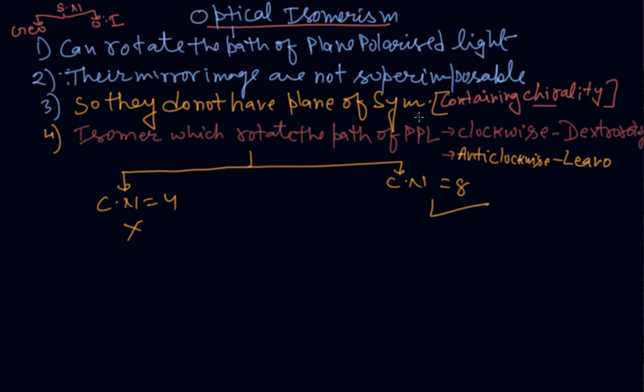And the isomer which can rotate the path of plane polarized light clockwise, they are called dextrorotatory. And the isomer which can rotate the path of plane polarized light anticlockwise, they are called levorotatory.